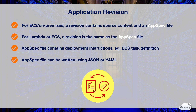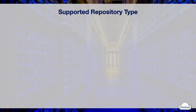The app spec file can be written either in JSON or YAML format. A repository is the location that stores the revision required for the deployment. CodeDeploy currently supports S3 buckets, GitHub repositories, and Bitbucket repositories.